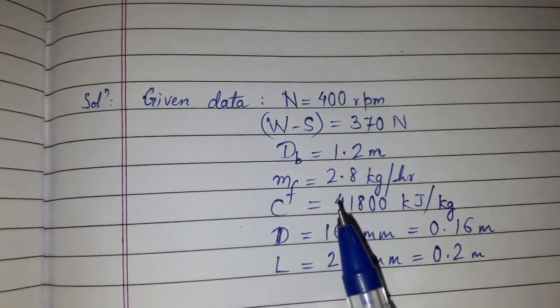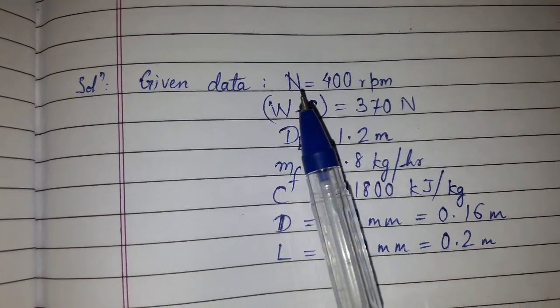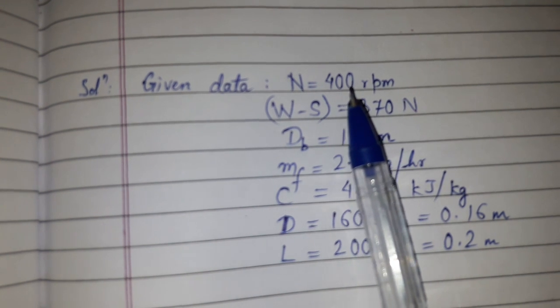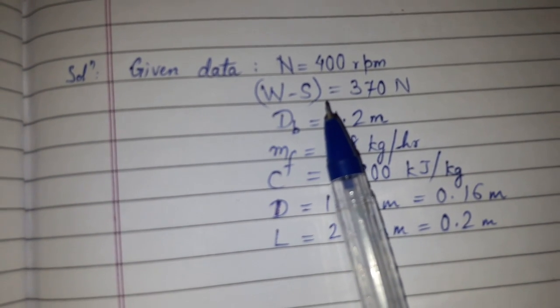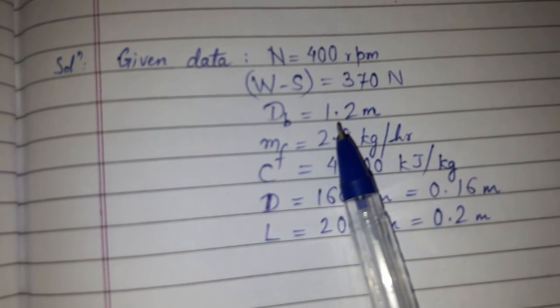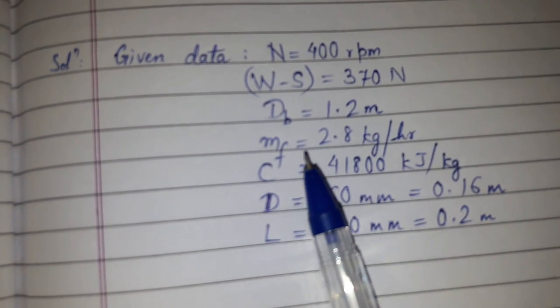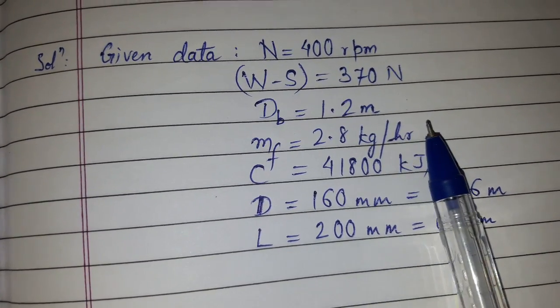So this is the information or the data given which we have converted into the required unit. N is given as 400 rpm. W - S, that is load on brake, is given as 370 newton. DB is given as 1.2 meter. MF is given as 2.8 kg per hour.